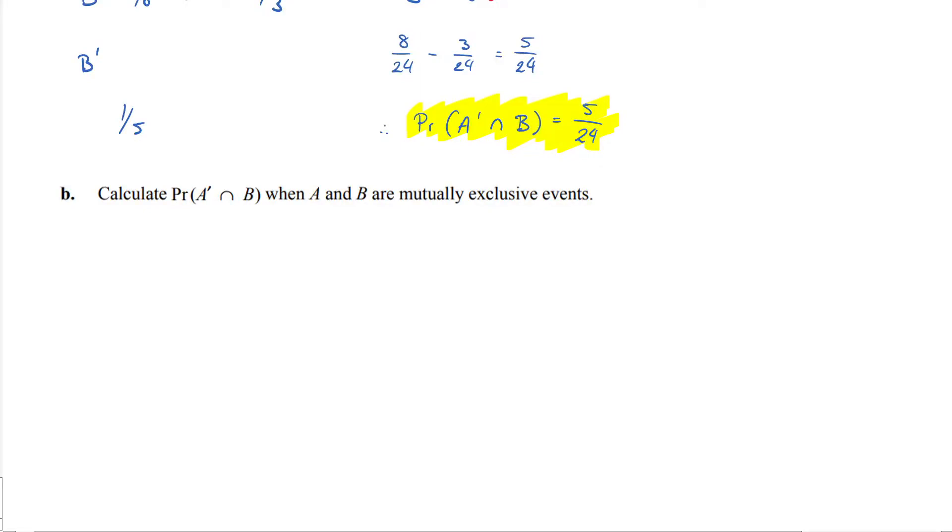We're now going to answer part B of this question, which is a really great question. It says, calculate the probability of A complement intersection B when A and B are mutually exclusive events.